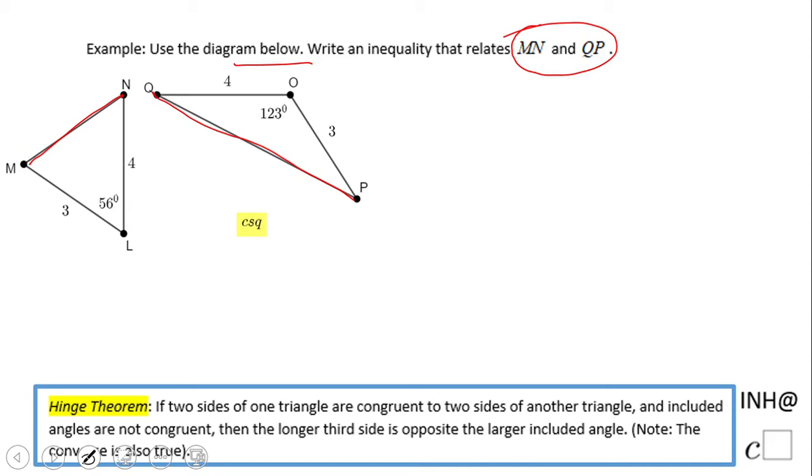If you look at the picture, you kind of get the idea what it is. However, I would like to take a look at this hinge theorem, which says if two sides of one triangle are congruent to two sides of another triangle, in this case we notice these two sides are congruent and these two sides are congruent.